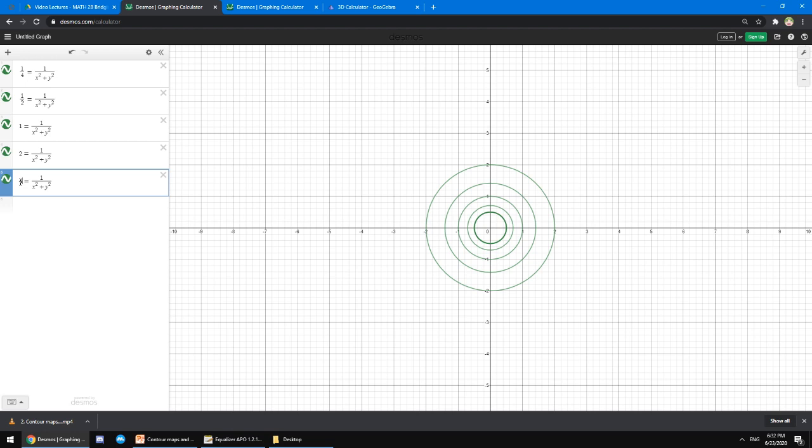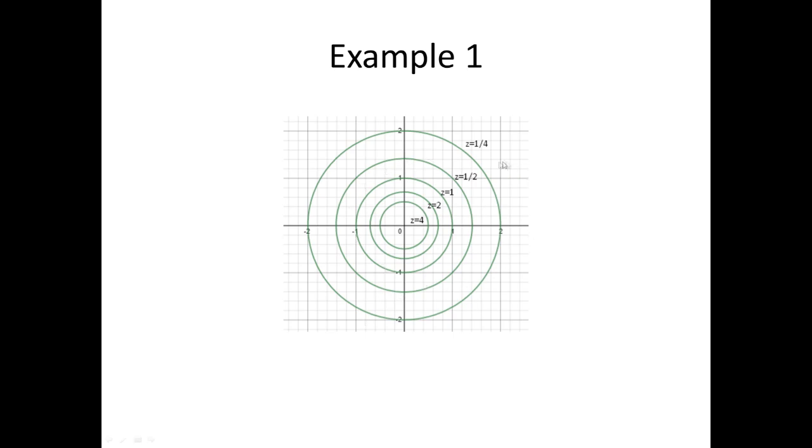In this case, each level curve is a circle. And this collection of circles is our contour map. Now, always remember to label your level curves. This illustration is incomplete. Let's go back to our slides. Now, this illustration is complete because we labeled our level curves depending on the values of z. Then, we just need to plot the circles in 3D space to obtain the graph of the function.